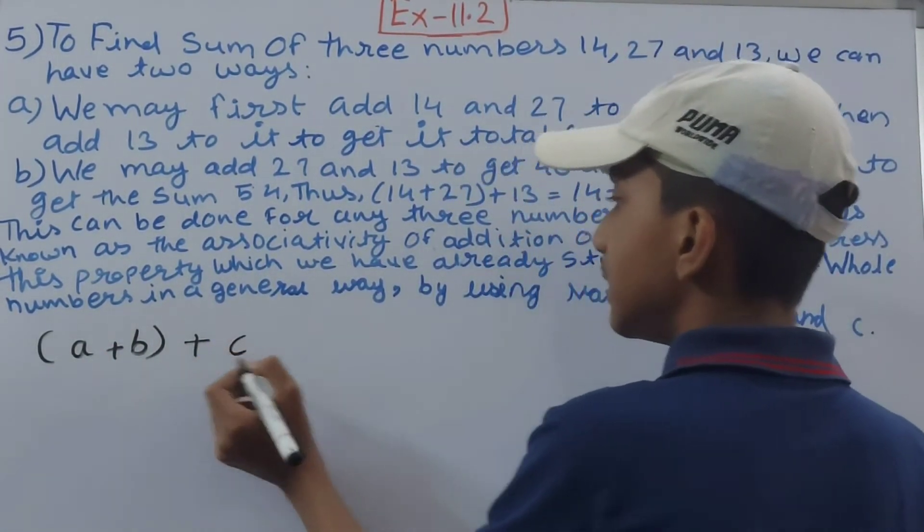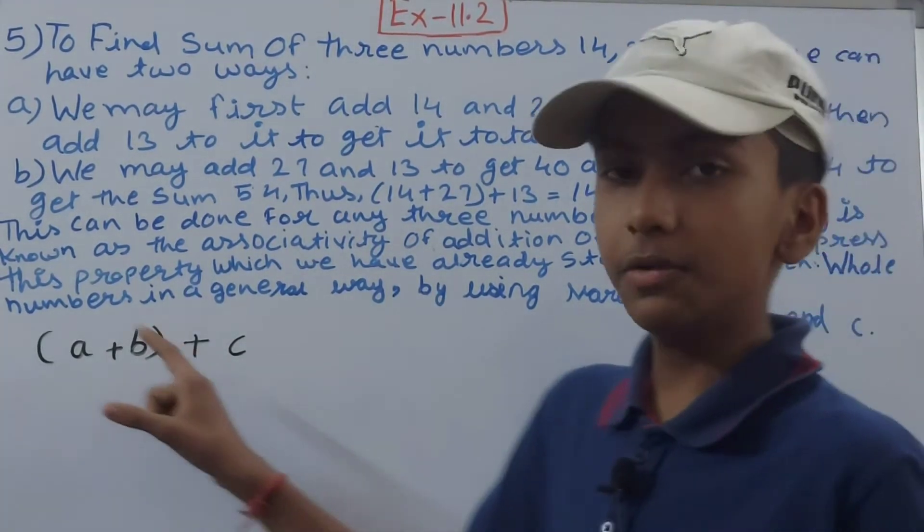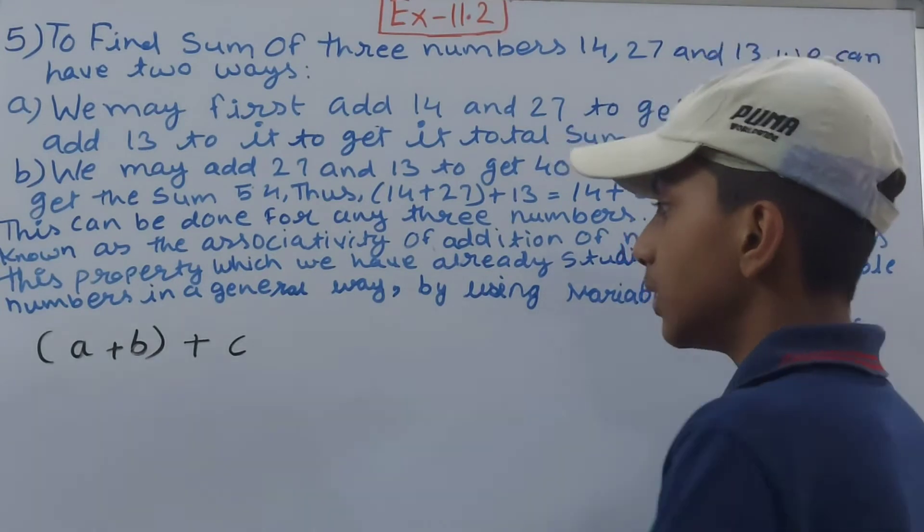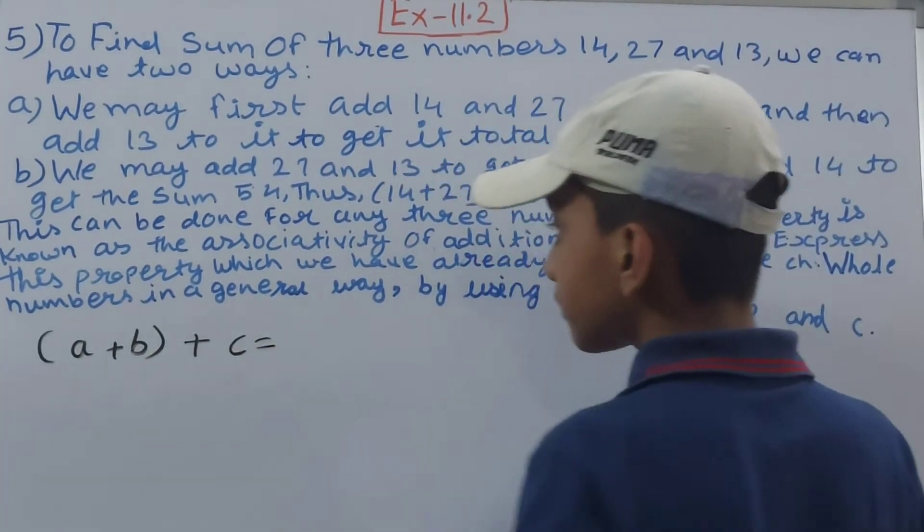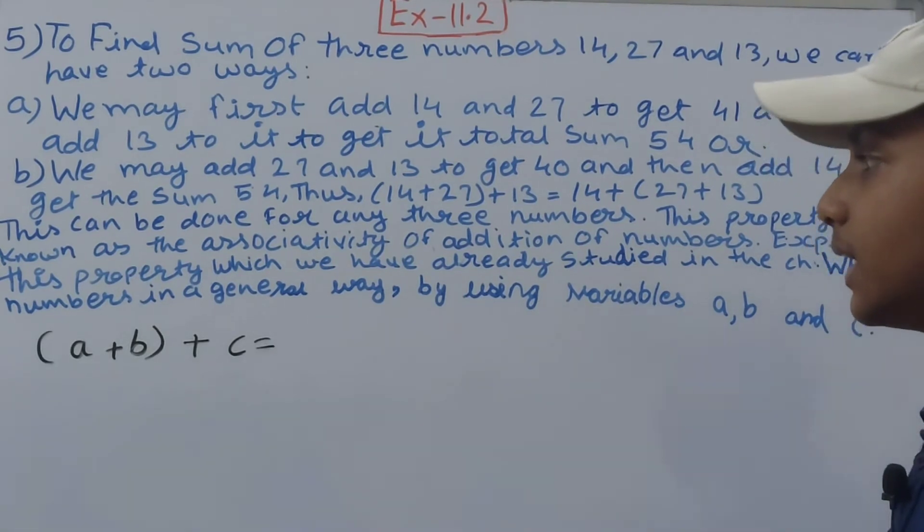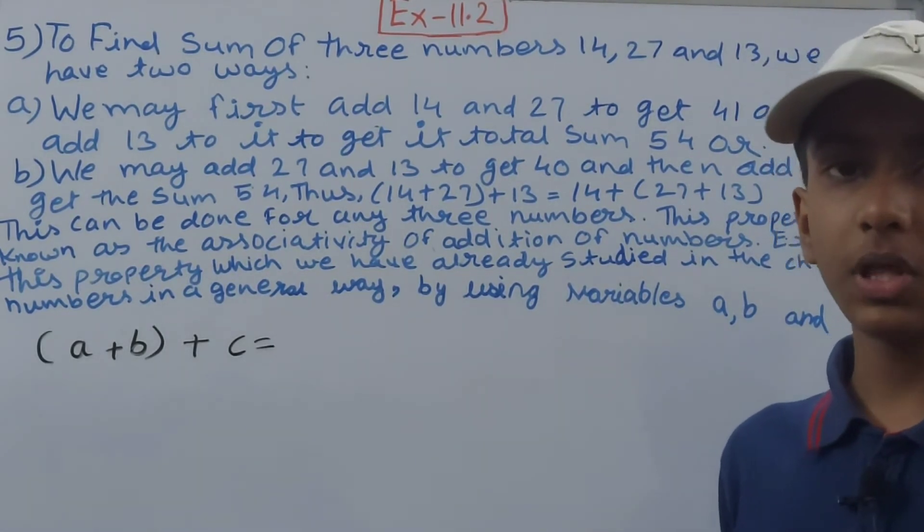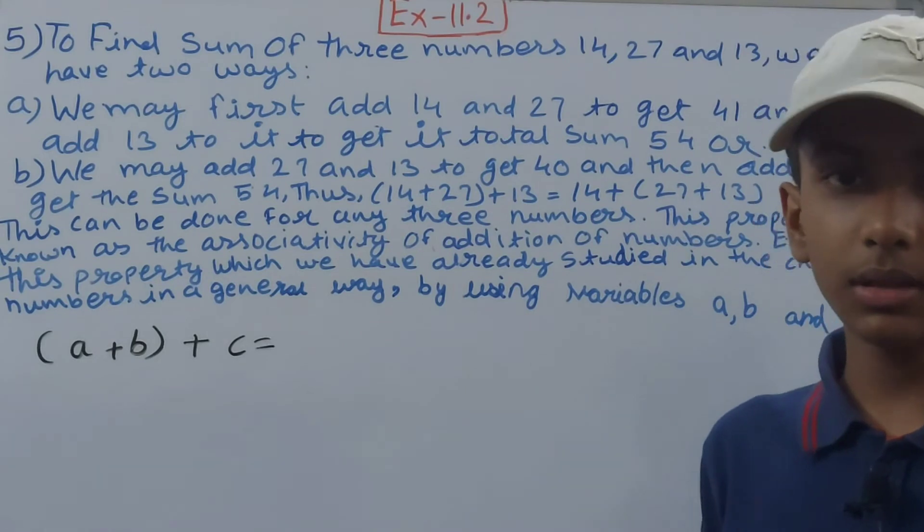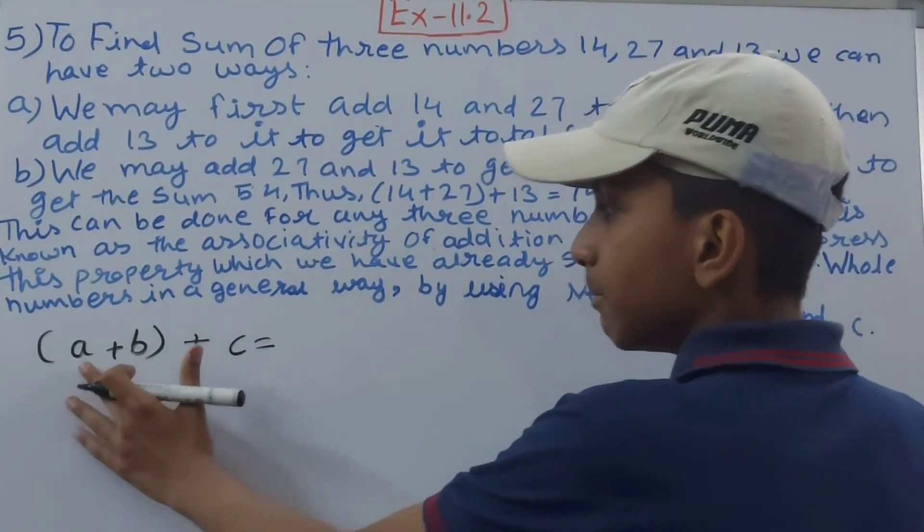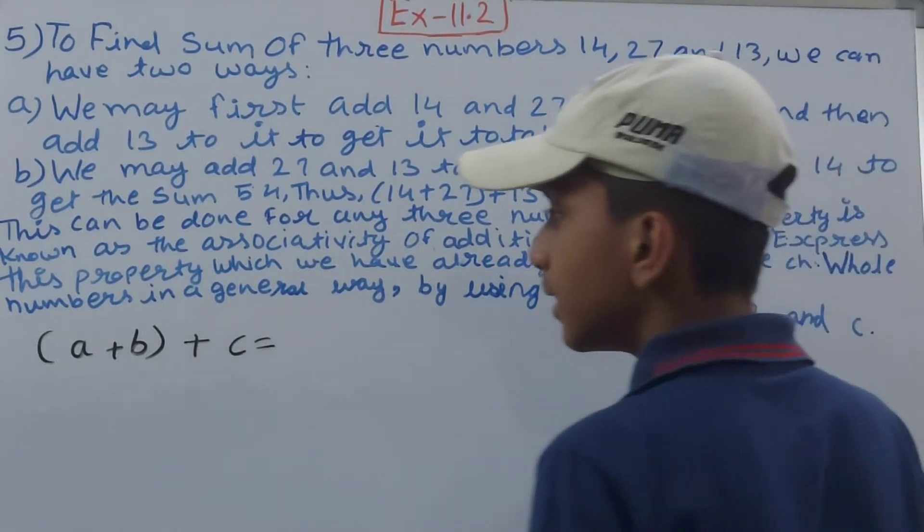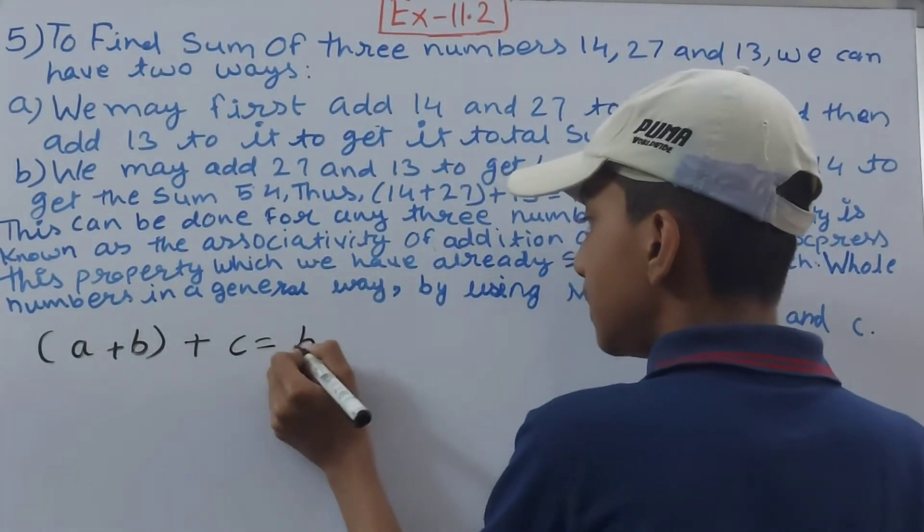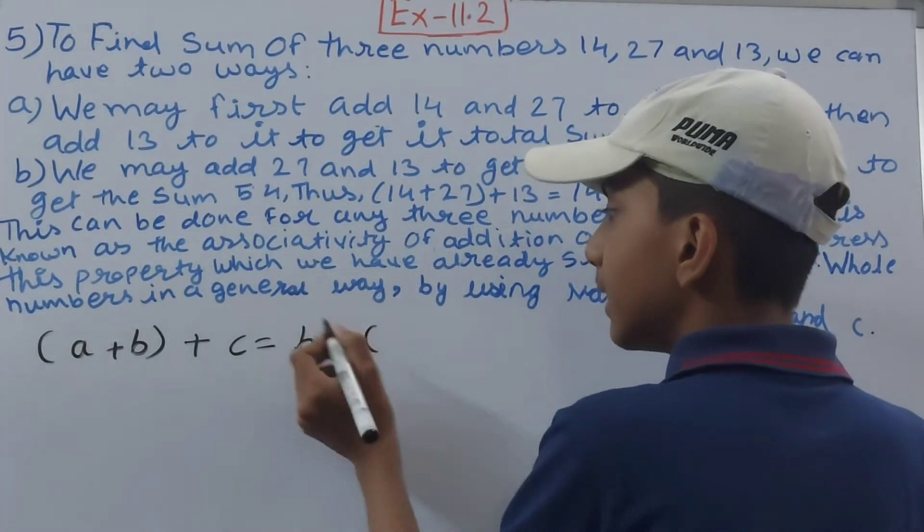Now, the second way: you can take any other two variables and put them in brackets, and add the last left variable. Now I will keep this a, but I will take c inside. So first of all, b will be left outside. So b plus, and in brackets we have a + c.